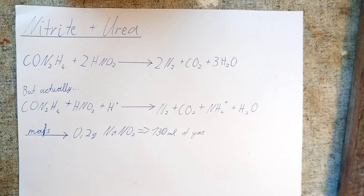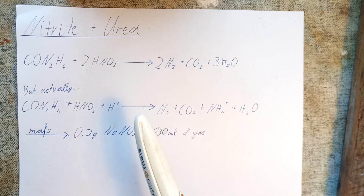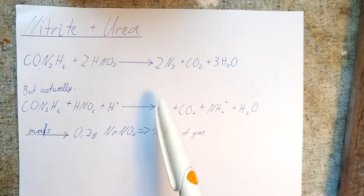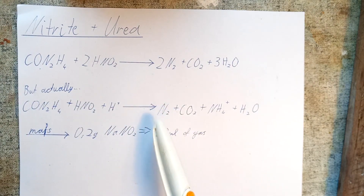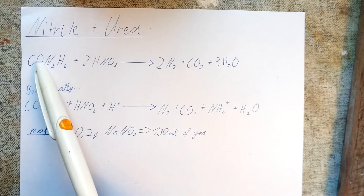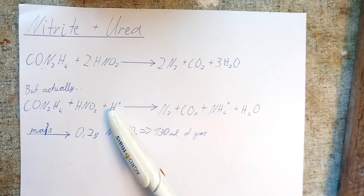It turns out that another reaction also happens, which only produces one molecule of nitrogen. They both happen in solution, but this second one happens when there is a huge excess of urea, whereas the first happens when there is not a huge excess. So if we use quite a bit of an excess of urea, we can ensure that basically only the first reaction happens.